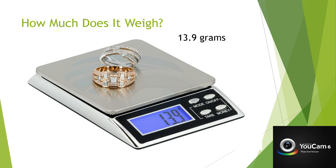In this example of how much something weighs, I used the basic kitchen scale we have in the classroom. It has a digital measurement display, which makes it easier for the kids to see. We placed two rings on the scale, and as you can see it says 13.9. This scale measures in grams, so when reviewing this with the children we would say: these two rings weigh 13.9 grams, and we know that by placing them on the scale.